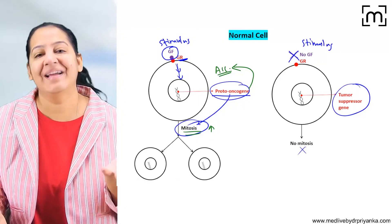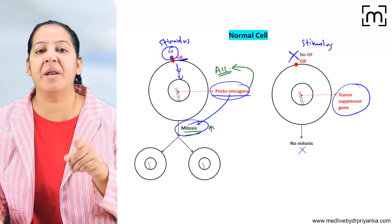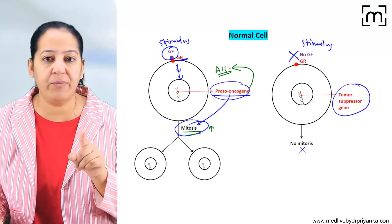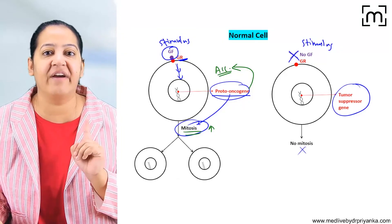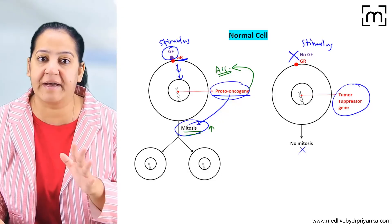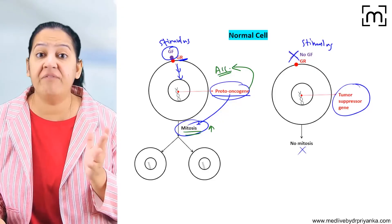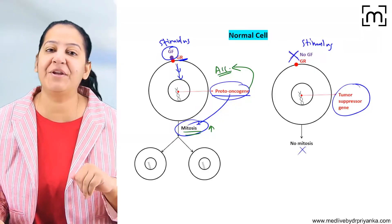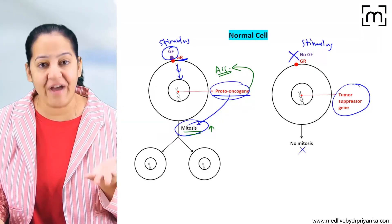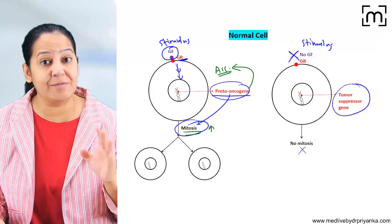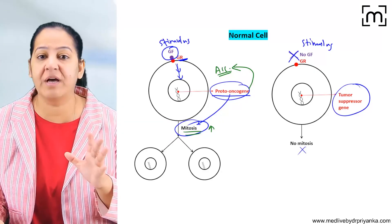In the same way, when we want to reduce the speed or stop the car, we apply the brake. So the tumor suppressor gene acts like the brake, reducing or stopping cell division.